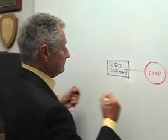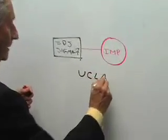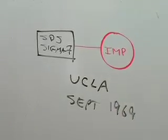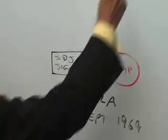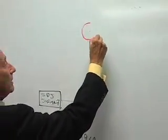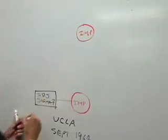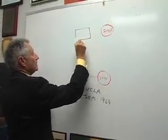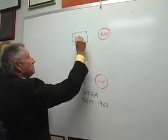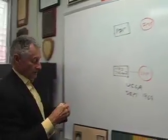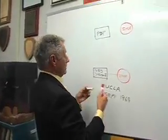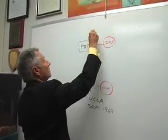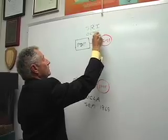This was UCLA in September 1969. A month later, up at SRI — Stanford Research Institute — another IMP arrived in October, and shortly thereafter they connected their host computer, which was a PDP machine, a Program Data Processor, a Digital Equipment machine, to their IMP. This was Stanford Research Institute, SRI, in October 1969.